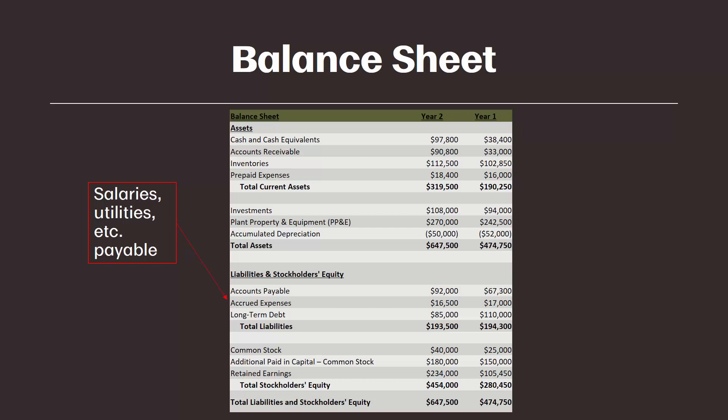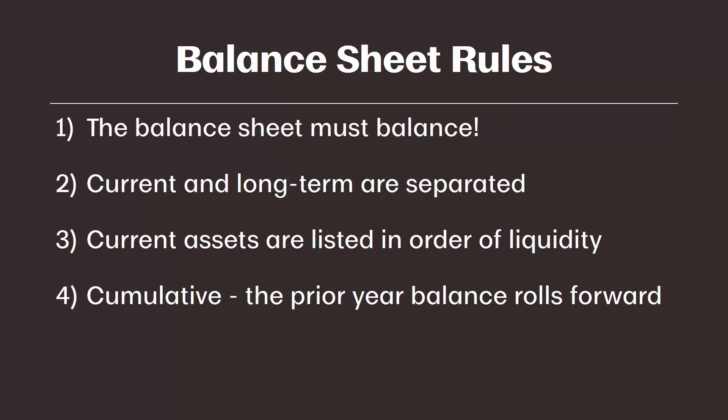Let's go back to the rules and add a couple more. We have not talked about this fourth rule yet. The fourth rule states that the balance sheet is cumulative — meaning the balances recorded are a running total back since the inception of the company. For example, Coca-Cola's plant, property, and equipment balance is a cumulative total of all equipment the company purchased and sold since they were established in 1892. I use this example to drive home the cumulative nature of the balance sheet.